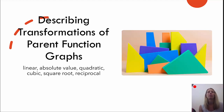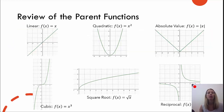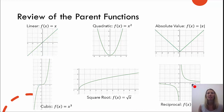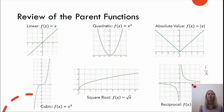Before we get started on talking about how we might describe the transformations, let's just review what the parent functions are. We have our linear, that's f of x equals x, or y equals x — I use y and f of x interchangeably. Quadratic: f of x equals x squared. Absolute value: f of x equals the absolute value of x. The cubic function: f of x equals x cubed. The square root function: f of x equals the square root of x. And lastly, the reciprocal function: f of x equals 1 over x.